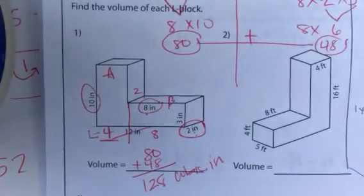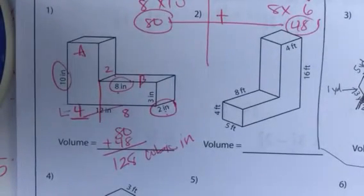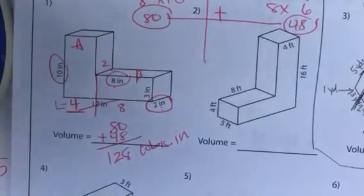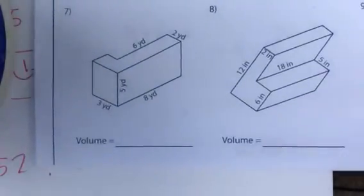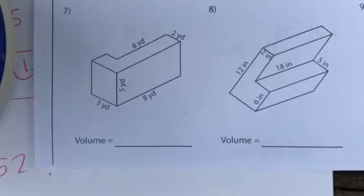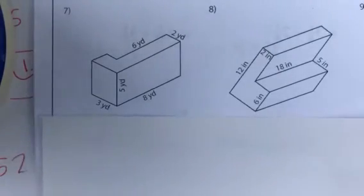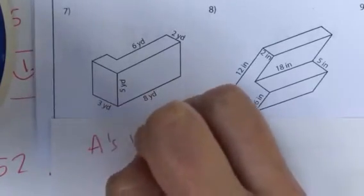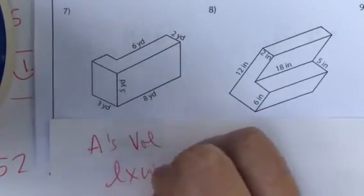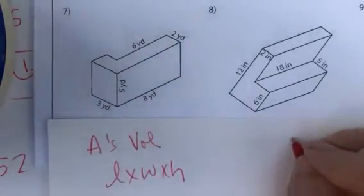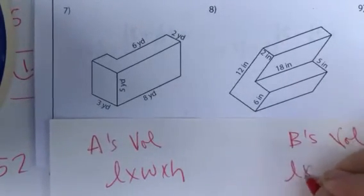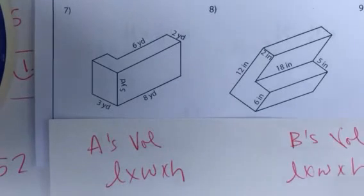Let me scroll down to, like, number 7 because it's not as straightforward as number 1. So, there's number 7, and I'm going to get a piece of paper to write on. So, we're going to have A's volume of length times width times height, and then we'll have B's volume. That's how you work each one of these. Length times width times height.